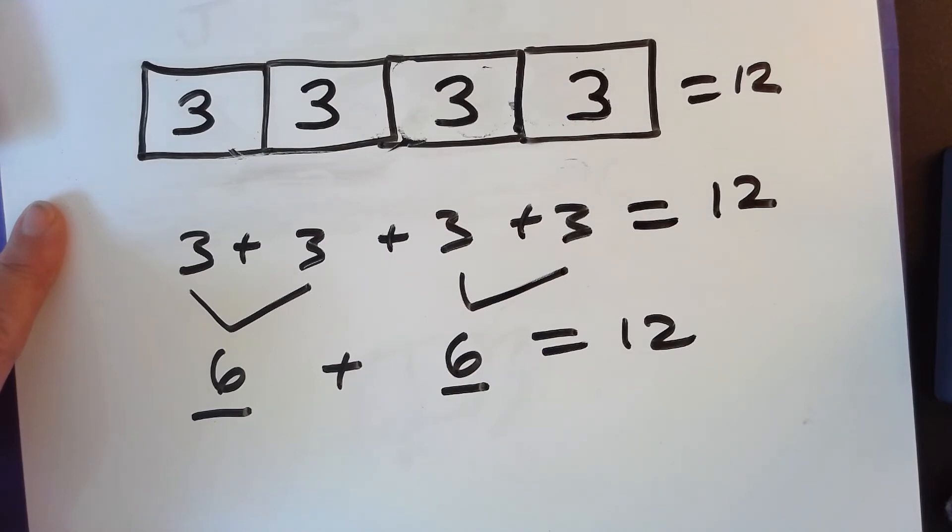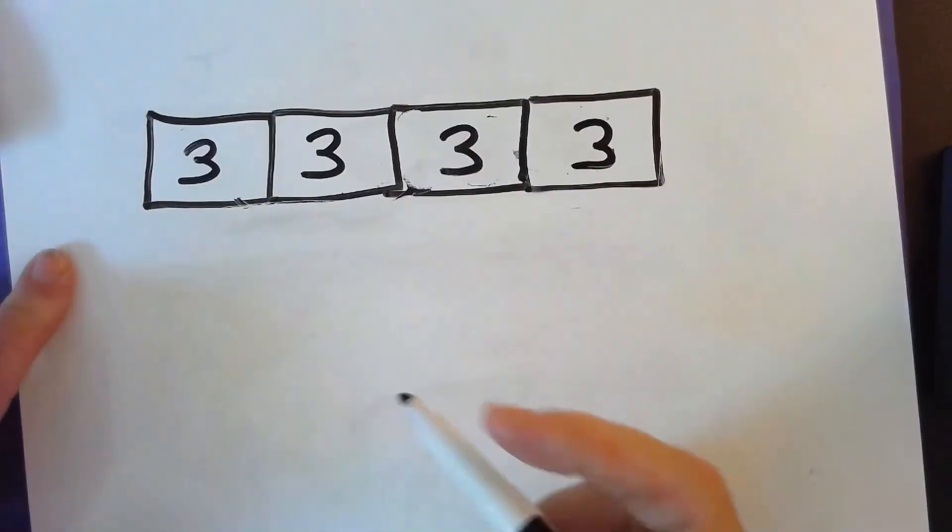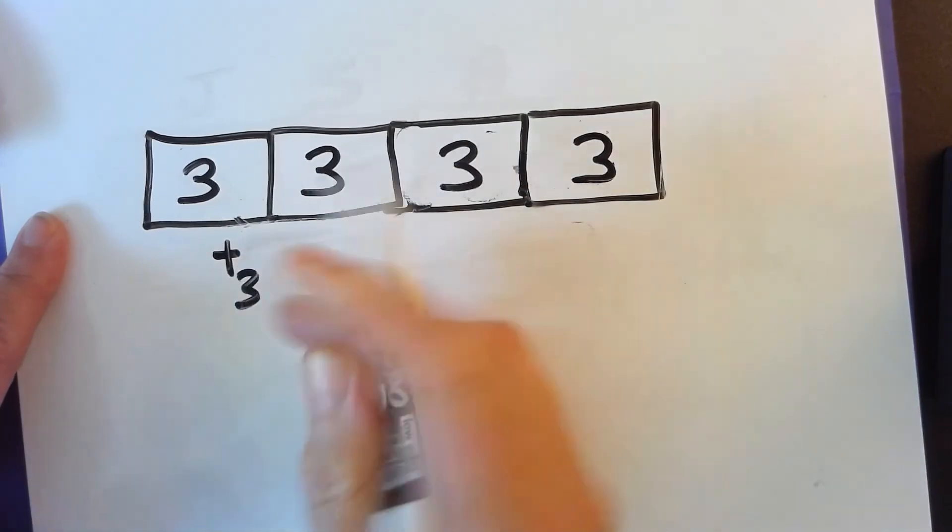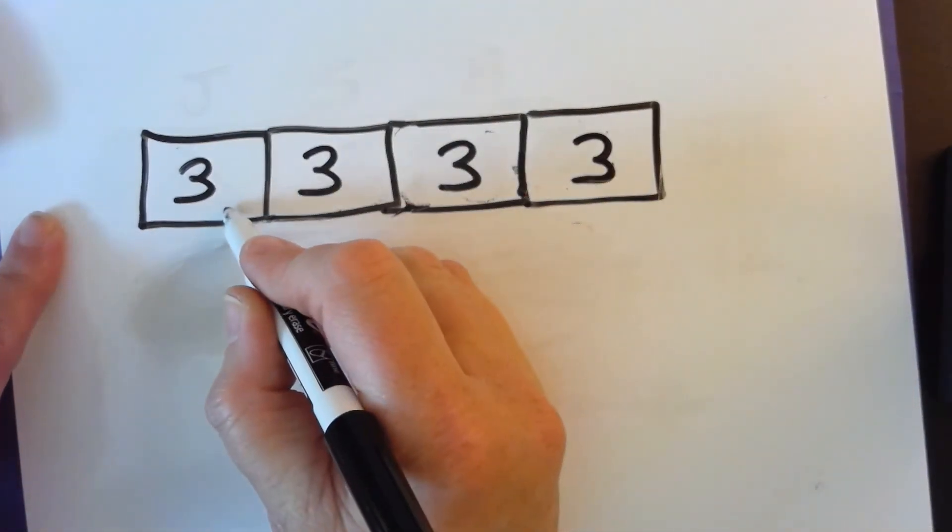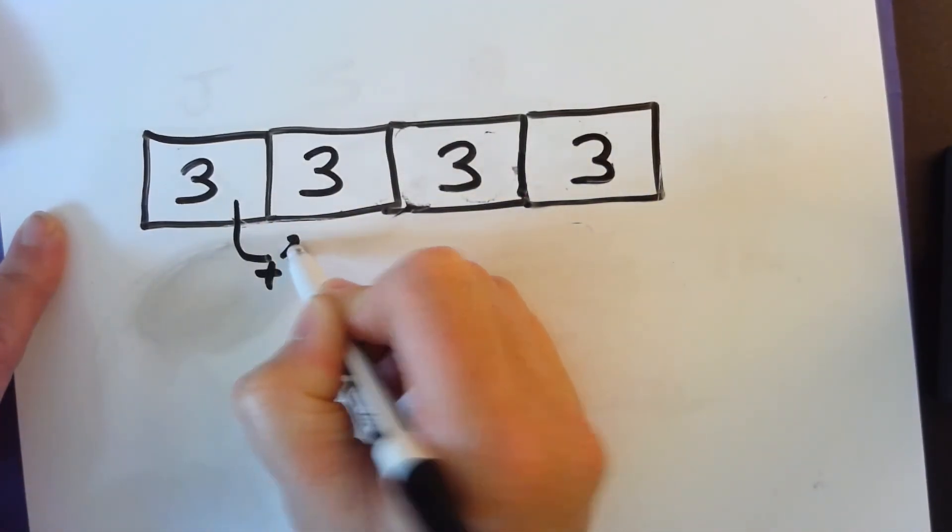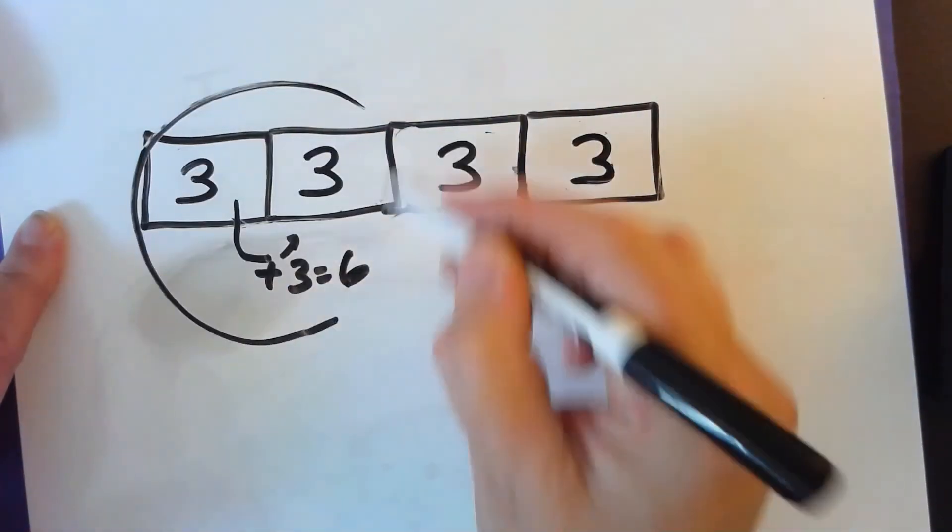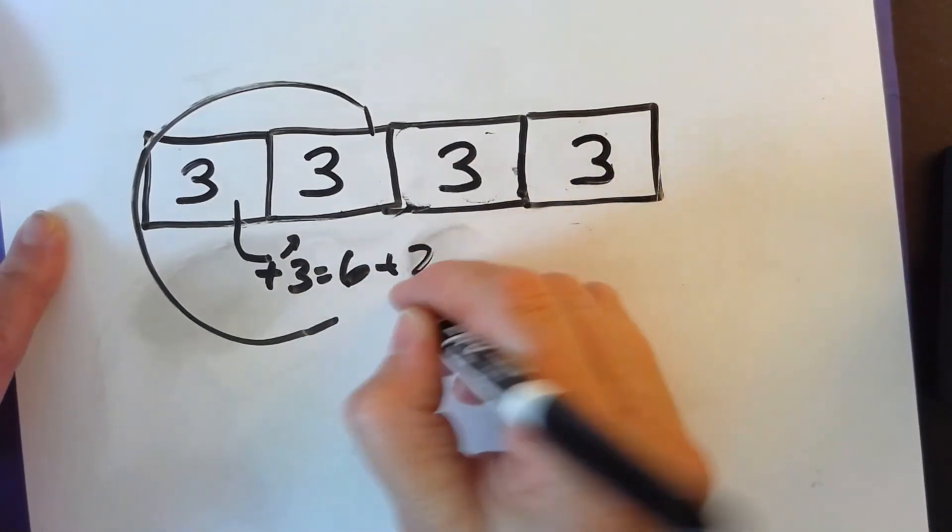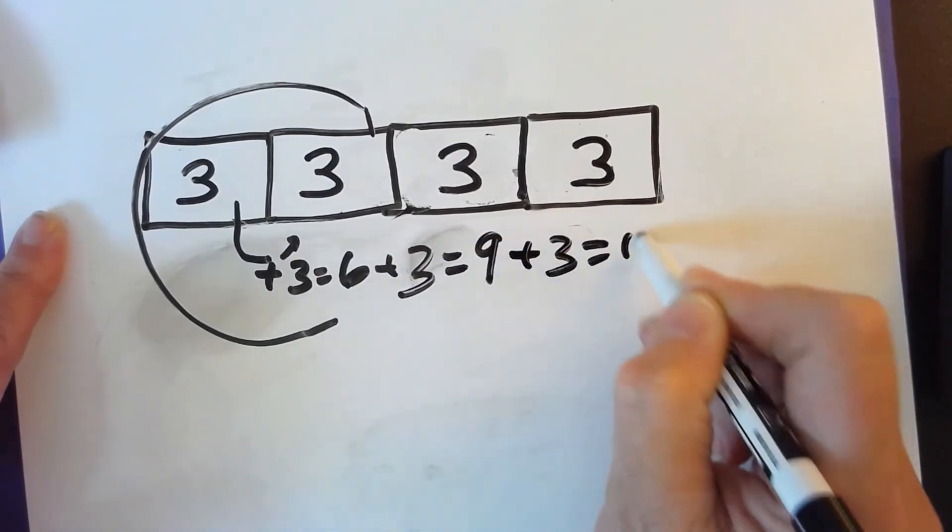Now let's try a little bit different. If we wanted to add this four groups of three, we can say three plus, sorry. Okay. So we're going to go three plus this three. So three plus three equals six. So these equals six plus three. Three equals nine plus three equals 12.